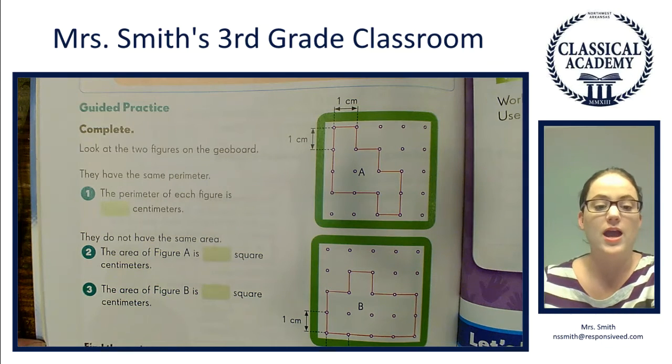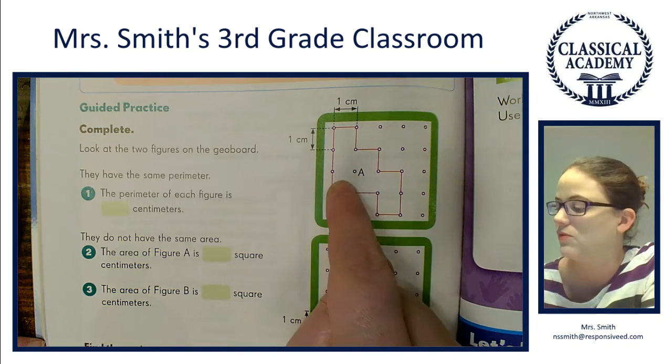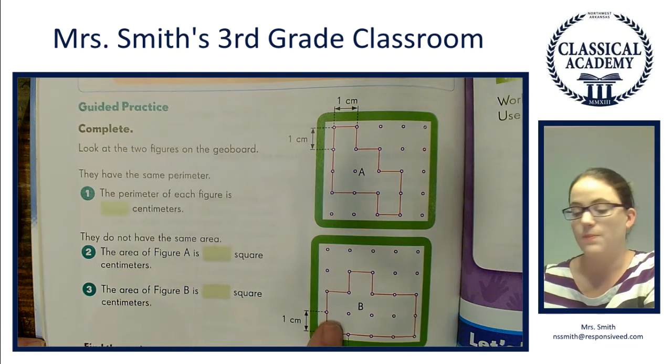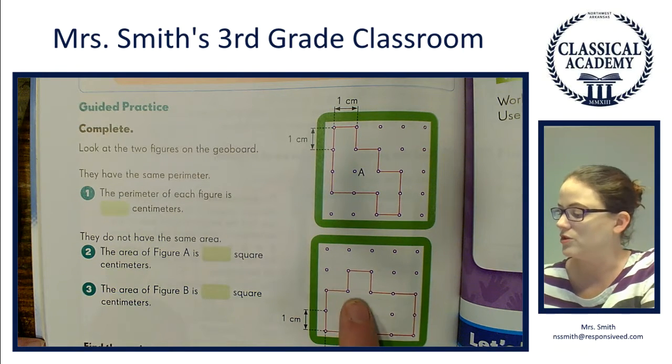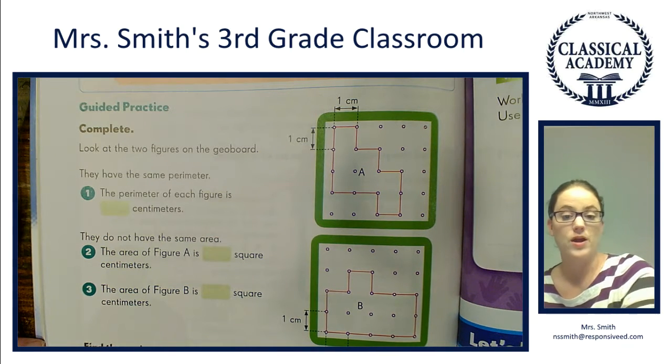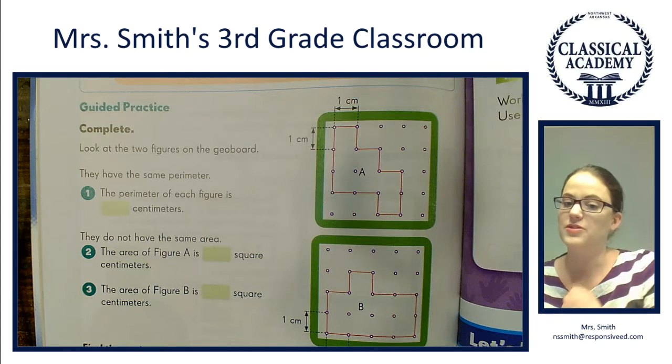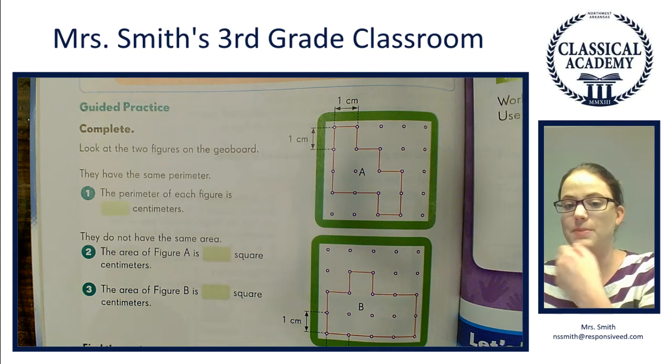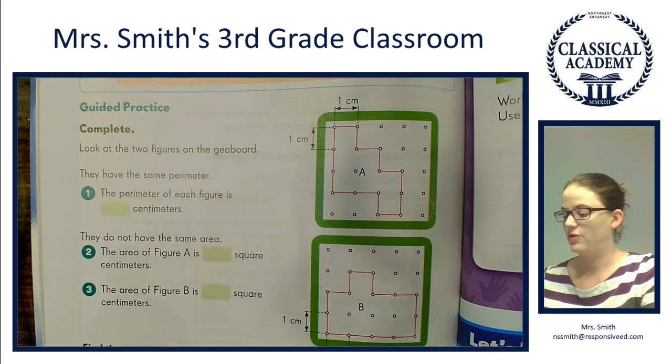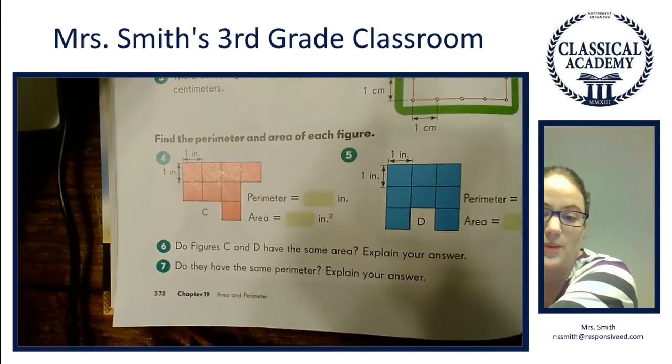The area of figure A is... let's count: 1, 2, 3, 4, 5, 6, 7 square centimeters. The area of figure B is 1, 2, 3, 4, 5, 6, 7, 8, 9 square centimeters. So figures can have the same perimeter but not the same area. They could even have the same area but not the same perimeter. Those numbers do not have to go together. That's what the book is trying to show you - they're unique to the shape.